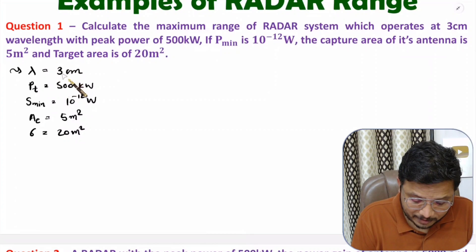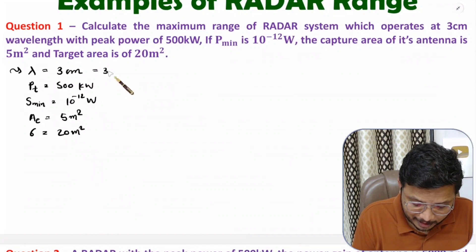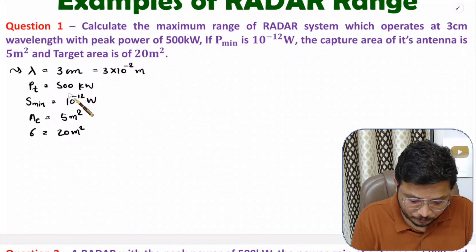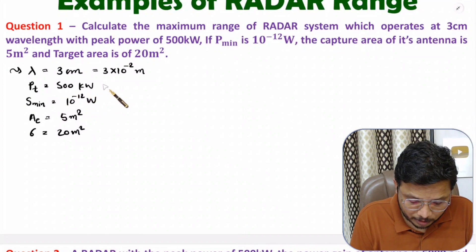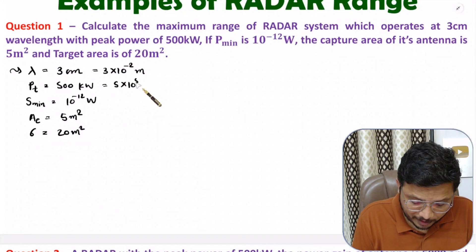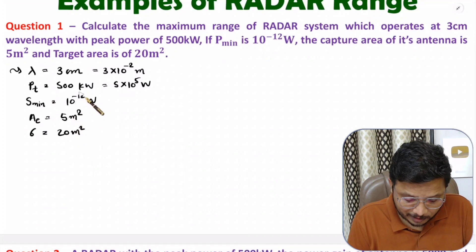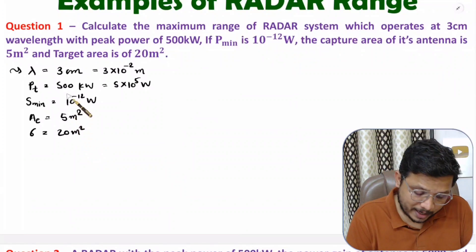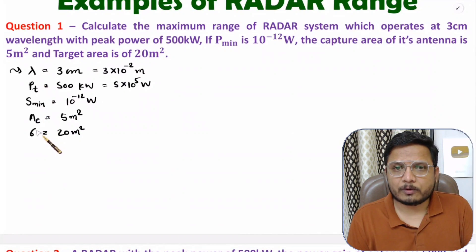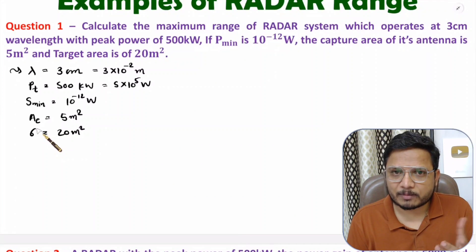After listing the data, convert it to SI units. Lambda is given in centimeters, so that is 3 into 10 to the power minus 2 meters. Transmitted power is 500 kilowatt, which means 500 into 10 to the power 3, that is 5 into 10 to the power 5 watts. The other data is already in SI units. Now we have all the data ready.